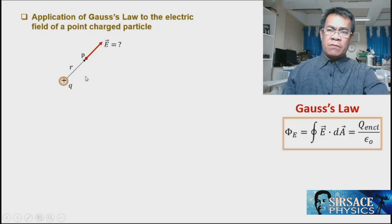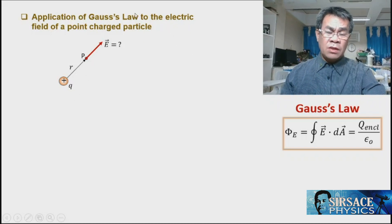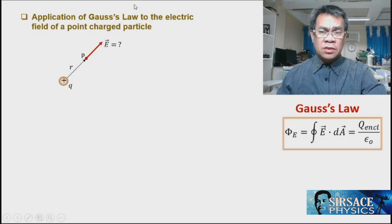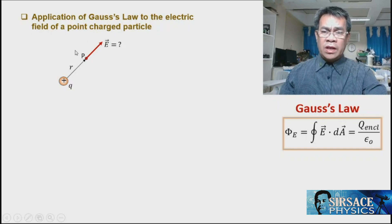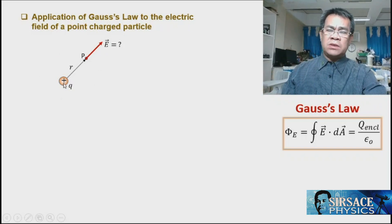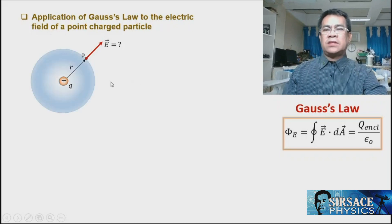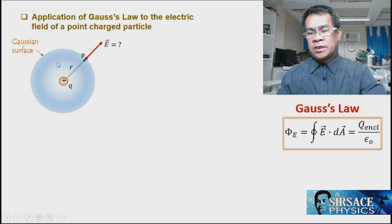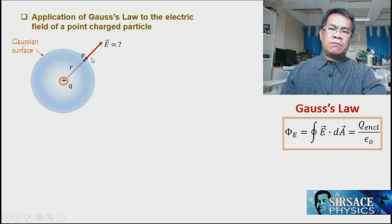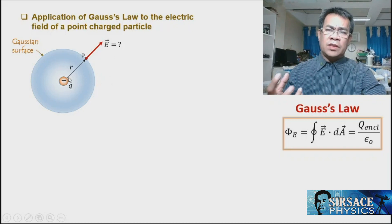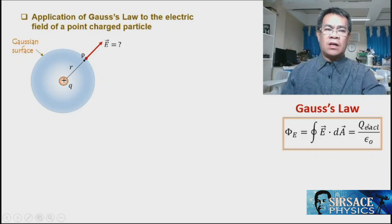To answer this problem, we use Gauss's Law, which requires a Gaussian surface — so we enclose this charge in a closed surface. Since this is a point charge, we use a spherical surface, so our Gaussian surface is spherical. Therefore we have a charge enclosed in this spherical surface.